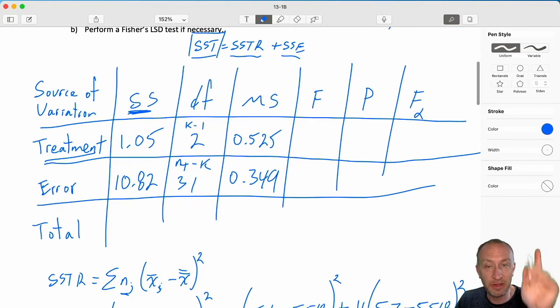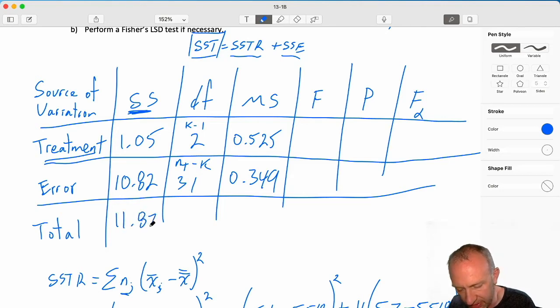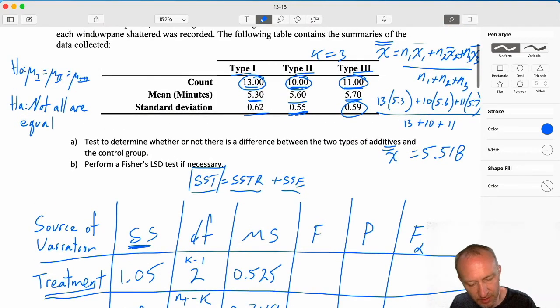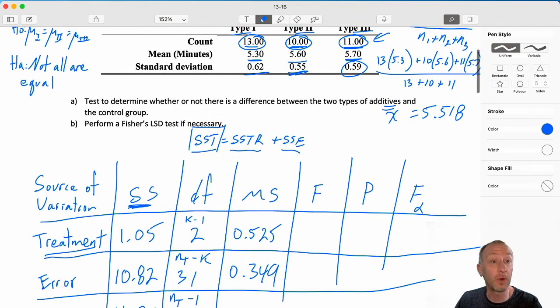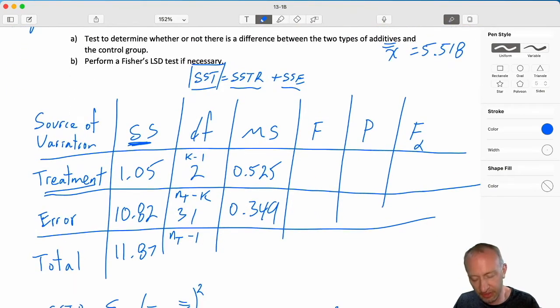Almost there. Now, to be complete, we'll add up SSTR and SSE, and that gives me my SST of 11.87. This degrees of freedom, Nt minus 1. Here we had 34 observations. 34 minus 1 is 33, which, as we can see, is also 31 plus 2.